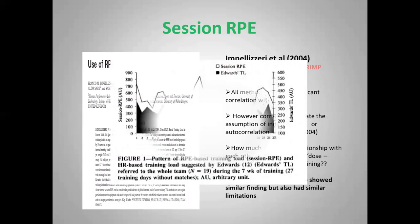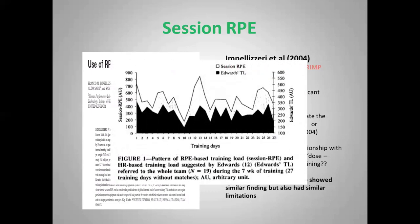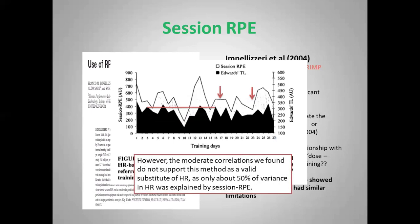For me, the interesting point is that we've got to differentiate between the two methods — although they might look similar and show a relationship at times, session RPE is doing one thing while Edwards' training load is reducing, or vice versa. There are cases where the lines diverge quite widely. The discussion in that paper stated that 'the moderate correlations we found did not support this method as a valid substitute for heart rate, as only 50% of the variation in heart rate was explained by session RPE' — yet this paper is often quoted as a basis for using session RPE in team sports.